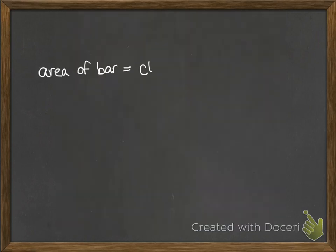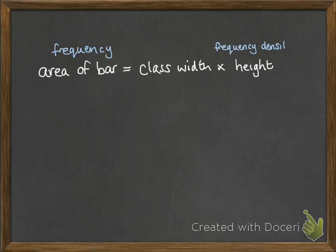Now the area of the bar is the class width times the height. The area of the bar is what gives us the frequency, and the height is called the frequency density.